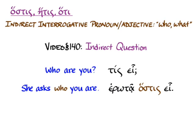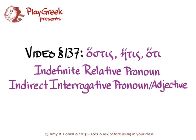ἐρωτᾷ ὅστις εἶ. She asks who you are. There will be many more examples when we get to section 140, but for now, you've dealt with section 137, and you can try your hand at declining ὅστις, ἥτις, ὅ τι and using it as an indefinite relative. Thank you.